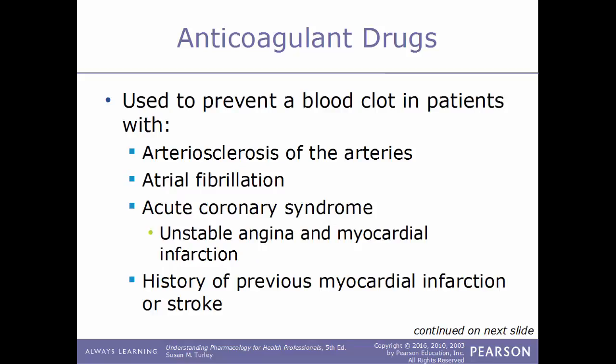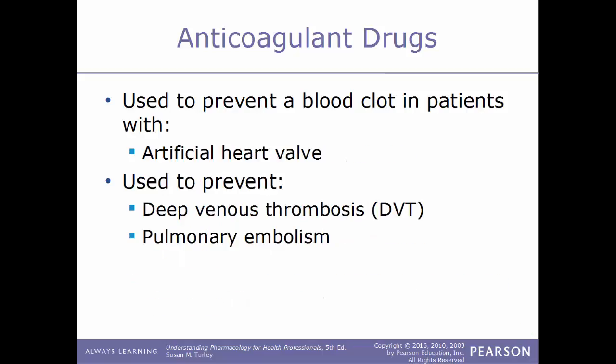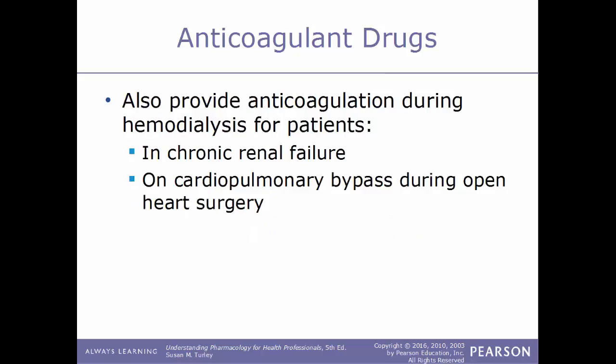Anticoagulant drugs are used to prevent blood clots in patients who have arteriosclerosis, atrial fibrillation, or acute coronary syndrome such as unstable angina or myocardial infarction, or people with a history of previous strokes or myocardial infarctions. They are also used to help prevent blood clots in patients who have an artificial heart valve. These drugs can also be used to treat DVT (deep vein thrombosis) and pulmonary embolisms.